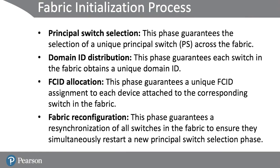In this sub-lesson we are going to learn about Fiber Channel fabric initialization. The fabric initialization process has four steps. The first phase is the principle switch selection phase, which guarantees the selection of a unique principle switch across the fabric. The next step is the domain ID distribution, which guarantees each switch in the fabric obtains a unique domain ID. FCID allocation guarantees a unique FCID assigned to each device attached to the corresponding switch. Then we have fabric reconfiguration, where resynchronization of all switches in the fabric happens so they simultaneously restart a new principle switch selection phase.